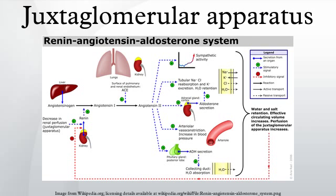The juxtaglomerular cells secrete renin in response to beta-1 adrenergic stimulation, a decrease in renal perfusion pressure, or a decrease in NaCl concentration at the macula densa, often due to a decrease in glomerular filtration rate, resulting in slower filtrate movement through the proximal tubule and, thus, more time for reabsorption.